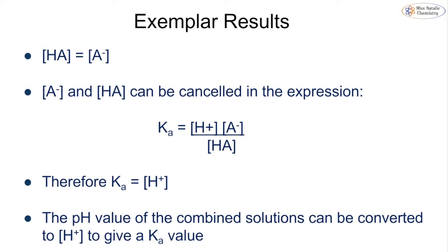What we can then do is we can use our equilibrium law to tell us our hydrogen ion concentration. So Ka is going to be equal to this hydrogen ion concentration. We can then use our pH value to determine our hydrogen ion concentration, which is then therefore equal to our Ka value.